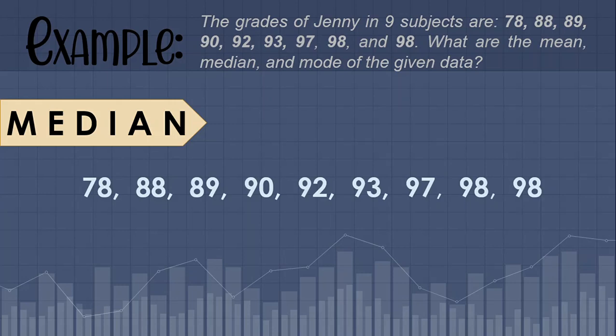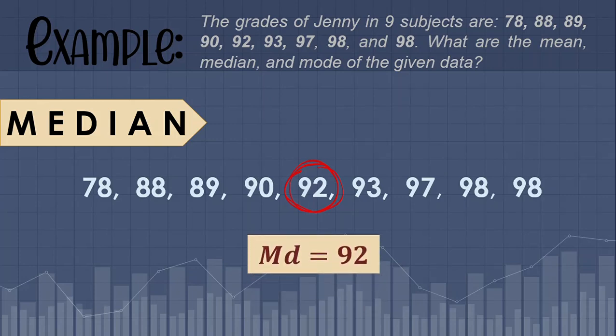We have an odd number of data since we have nine values in our set of data. Looking at our given set of data, we can easily locate our middle value, which is 92. Therefore, the median of this given set of data, or Md, is equal to 92.